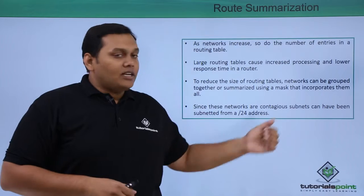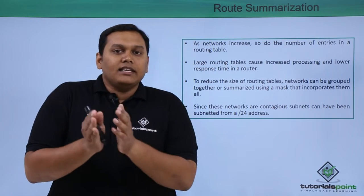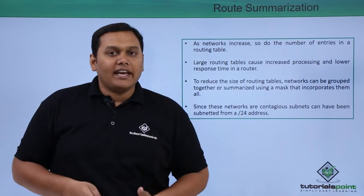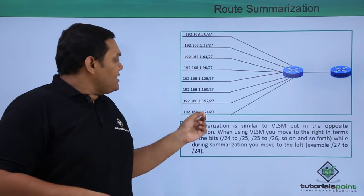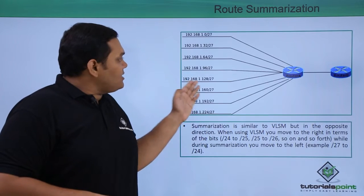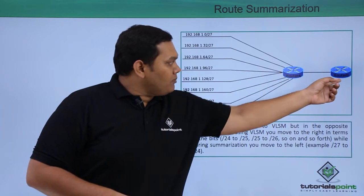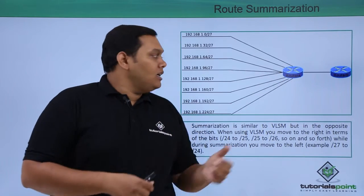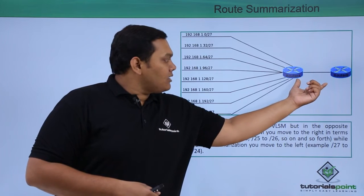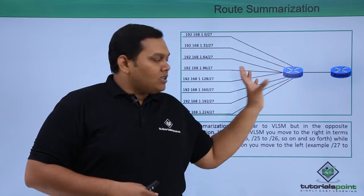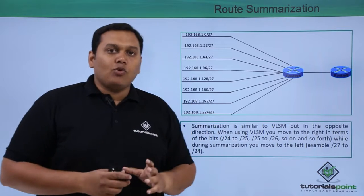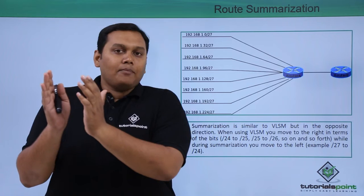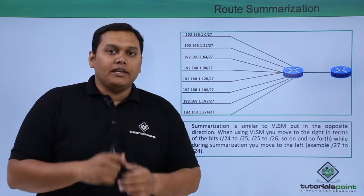These networks are contiguous subnets that have slash notations like /24, etc. There are many subnets all connected to Router A, and it has to pass to Router B. When the routing table passes from one router to another, the response time or router activity time would be very less. Route summarization takes place and this will become a single IP address forwarded to Router B.